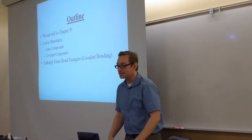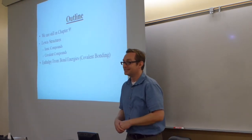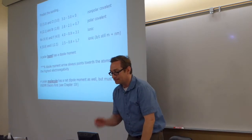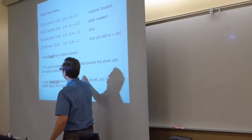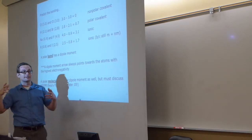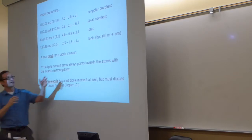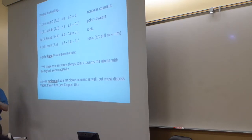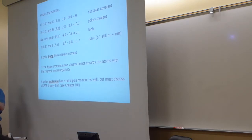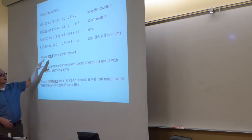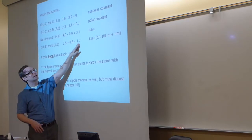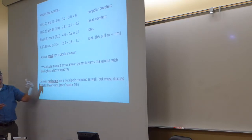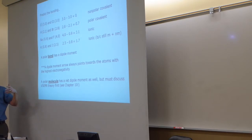My idea of fun might be your idea of misery — hopefully it won't be too miserable. Last time we talked about bond polarity and electronegativity. Where do these electronegativity values come from? They come from a table — a table of numbers that give you a relative scale of which atoms want electrons more than others when bonded. We talked about how the difference in electronegativity helps you estimate if a bond is ionic, covalent, or polar covalent.